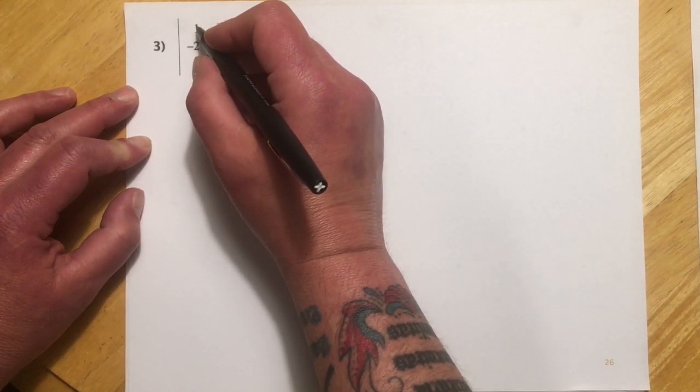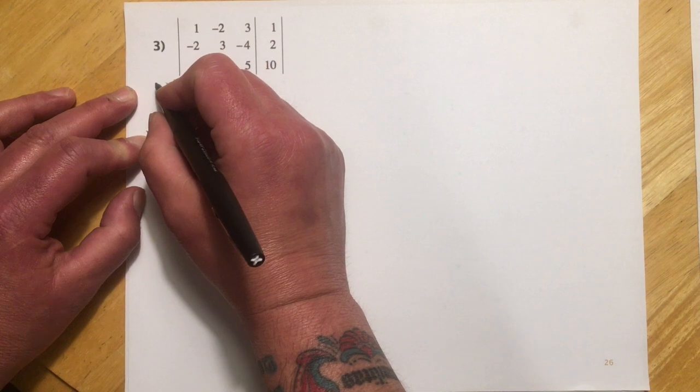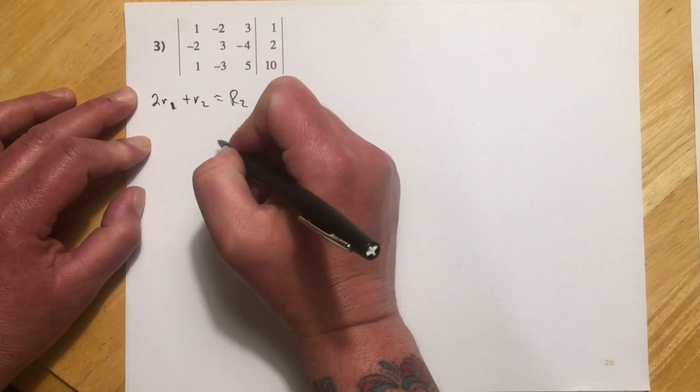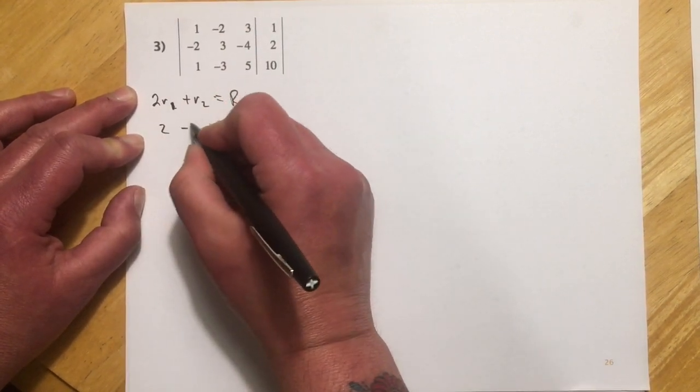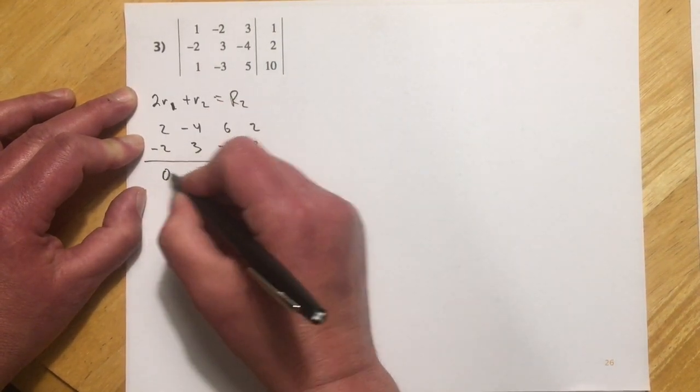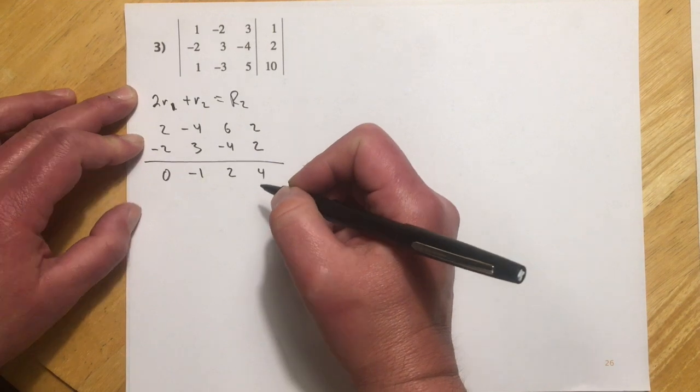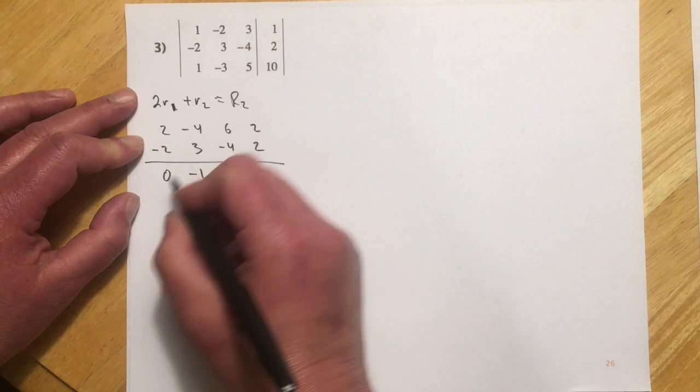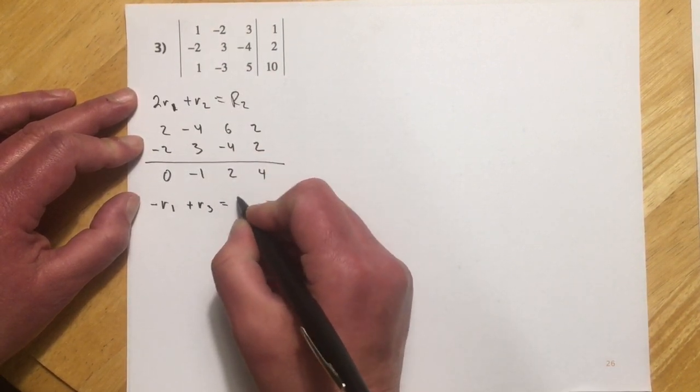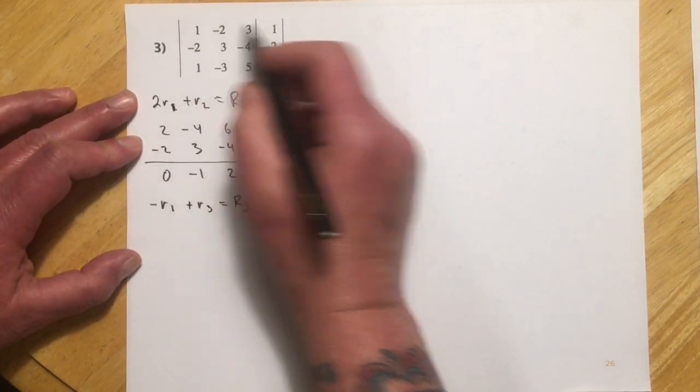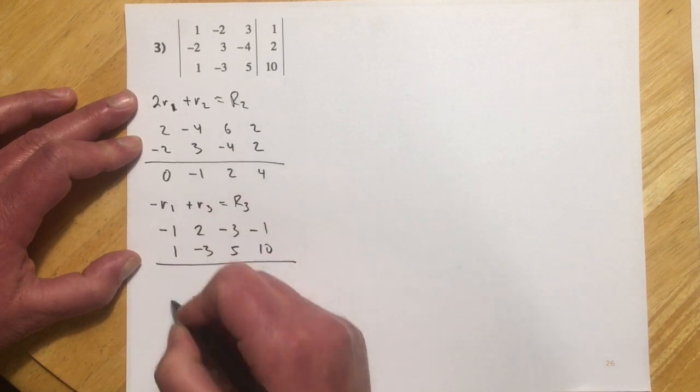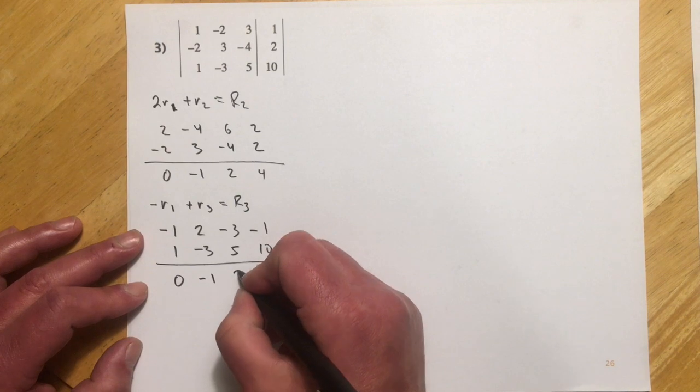Okay. And this last one. So again, we have a 1 up here already. So I'm going to use this 1 to knock out the 2 and the 1. So I'm going to go 2 times row 1 plus row 2 to make my new row 2. So 2 times this, so 2, negative 4, 6, and 2. And then add this one to it. So those drop out, negative 1, I get a 2 there, and a 4. And then I'll do the negative of row 1, and I'll add to that row 3, and that will knock out this 1. So negating that one, I get negative 1, positive 2, negative 3, negative 1, and 1, negative 3, 5, 10. So those cancel, this becomes negative 1. And let's see, that will be a 2 and a 9. So let me kind of write that up here. So I have 1, negative 2, 3, 1. And then my new row 2 and my new row 3.